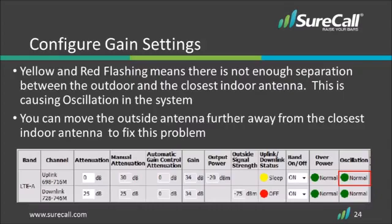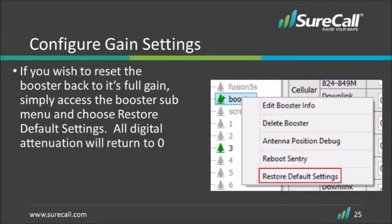One way to fix the oscillation problem is to move the outside antenna further away from the closest indoor antenna. You can also attenuate the booster, but this will result in a smaller area of signal coverage from each of the internal antennas. If you wish to reset the booster back to its full gain, simply right-click on the correct booster and choose Restore Default Settings. All digital attenuation will return to zero, but manual attenuation will remain unchanged.